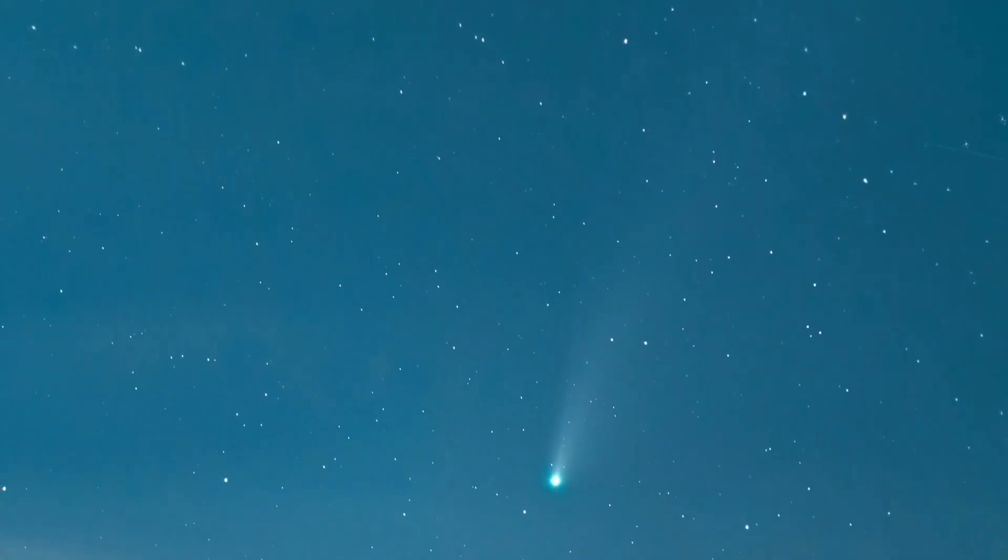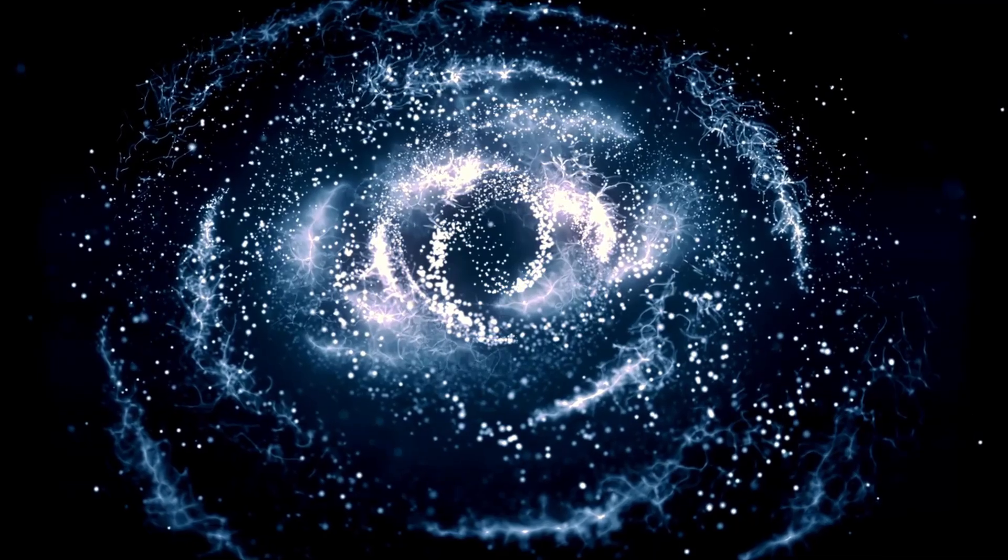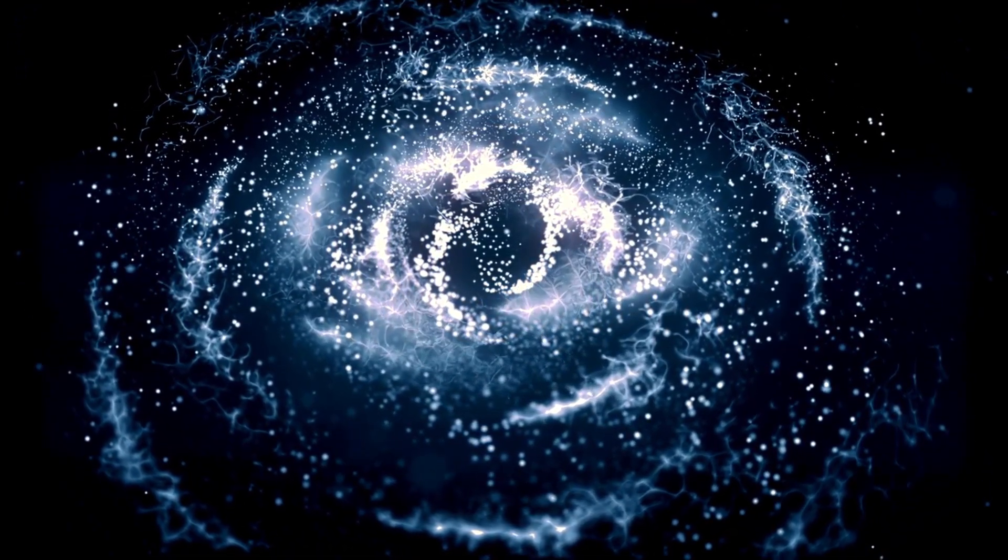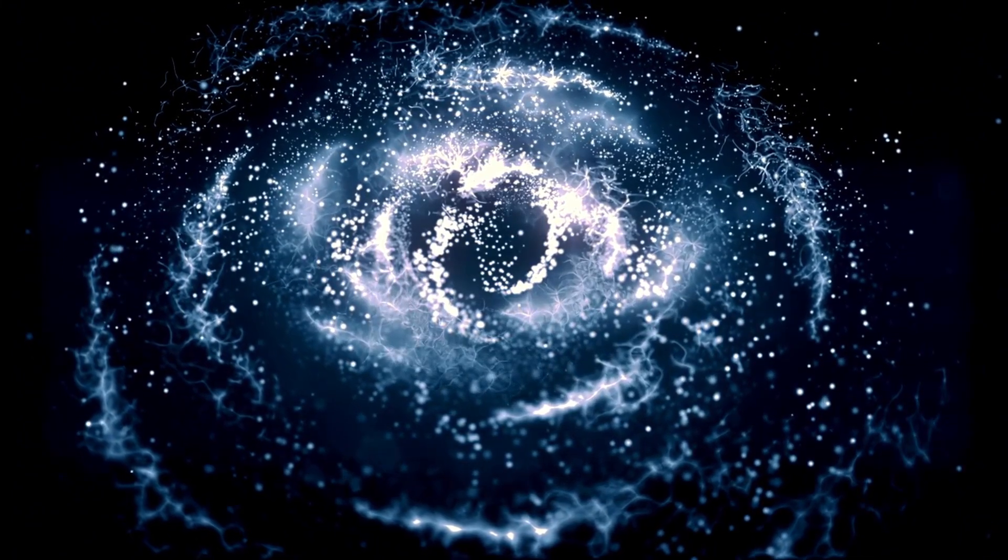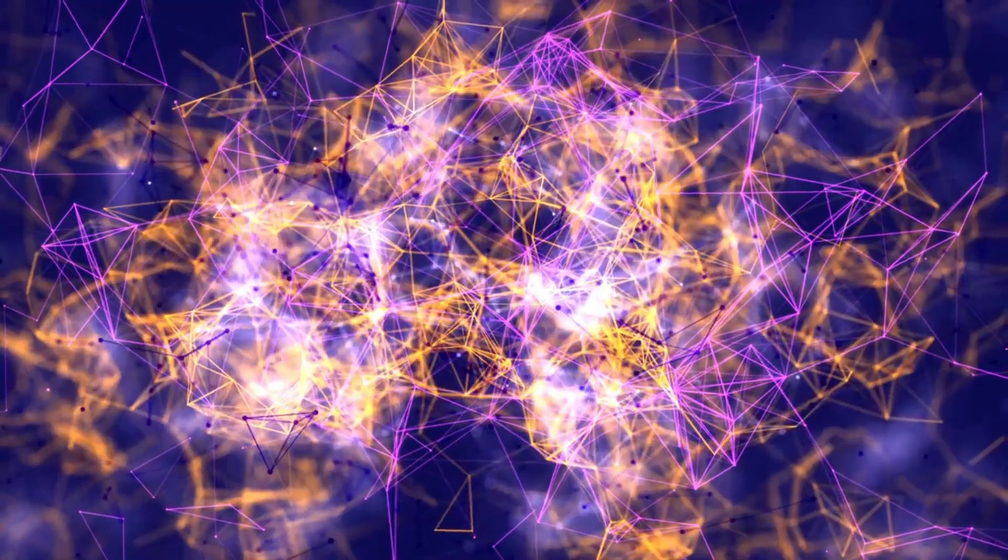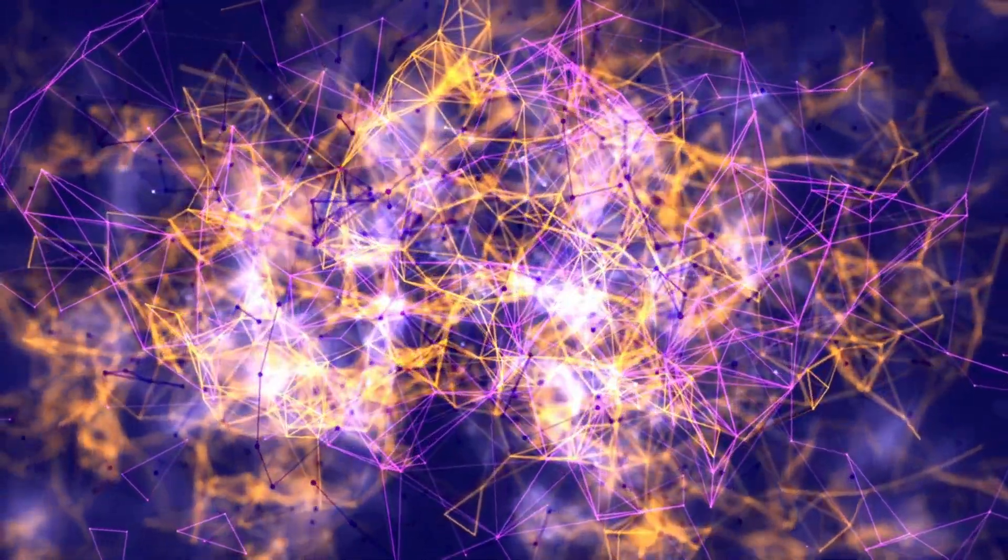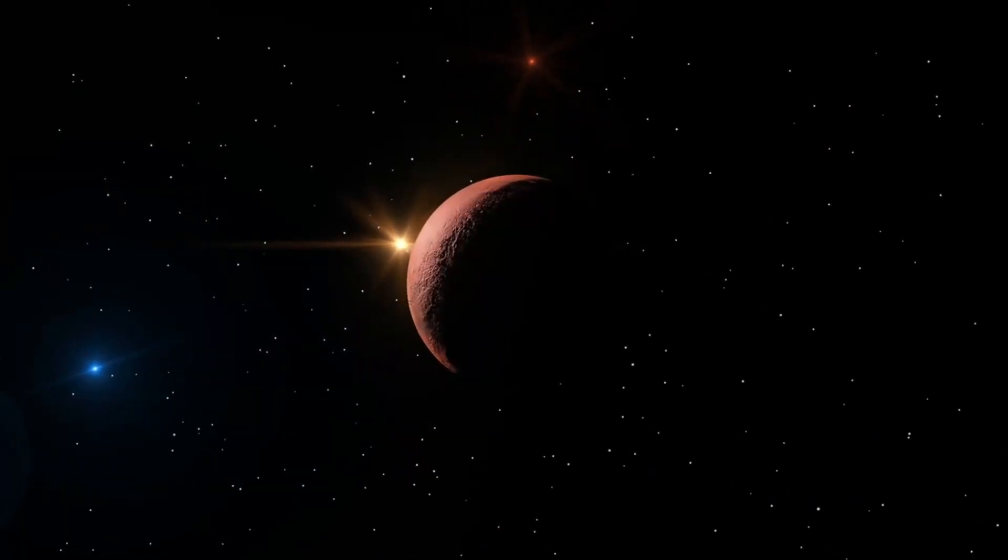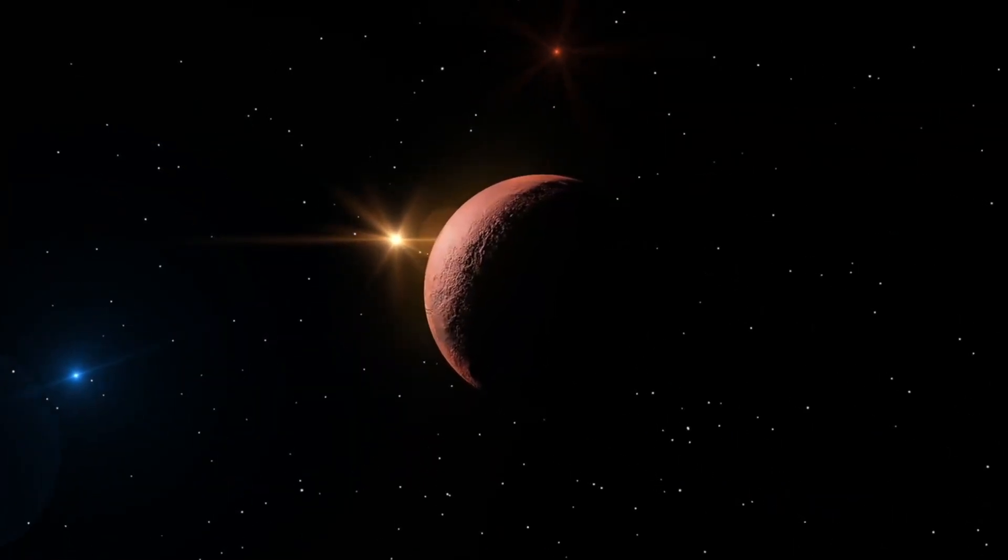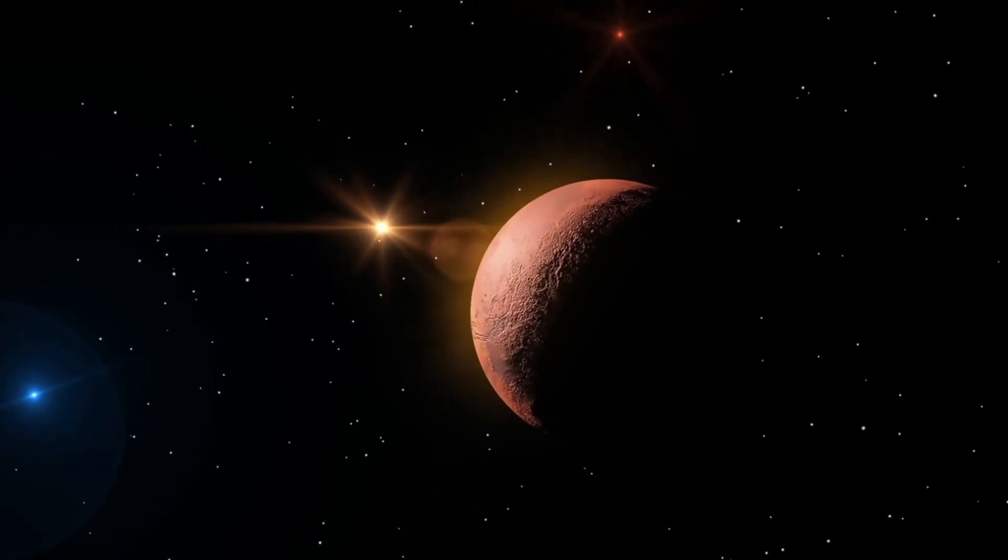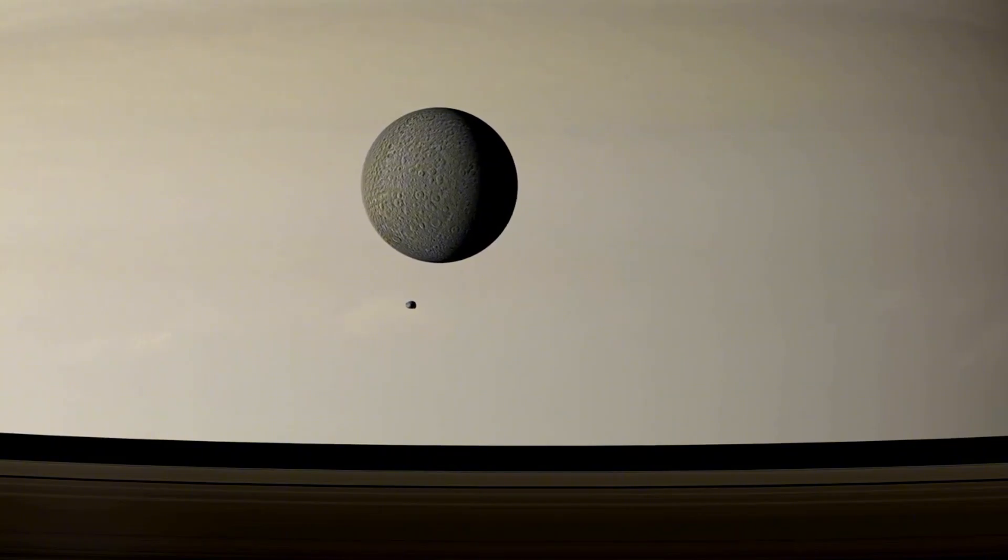Later computer simulations helped us understand how the giant planets, like Neptune, Jupiter, and Saturn, impacted Pluto's path around the Sun. Neptune has a special relationship with Pluto, in which for every two orbits Pluto makes around the Sun, Neptune makes three. This relationship helps keep Pluto's orbit predictable.